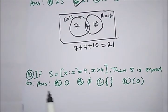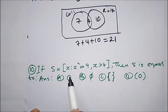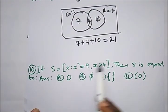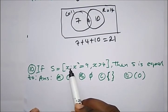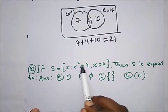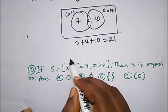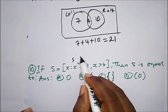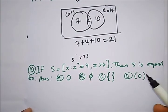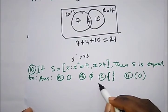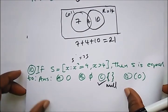I'll stop here as the video is getting long. Question 10: if S is defined as the set where x² = 9 and x > 4, then what is S? If x = 5, then 5² = 25, which doesn't satisfy x² = 9. So S is the null (empty) set. The answer is option C.